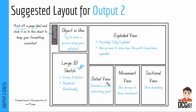Then we have the detail view — a zoomed-in part of an interesting section, or of just one part, like a lid on a bottle or the hand of a clock. Then a movement view showing how movement happens — twisting, moving up and down, opening and closing. You might want more than one movement view and could remove a different one to make room. Then your sectional view to show the inside — make sure you show the hatching so the examiner knows you understand how to do a sectional view. And an object in use view: if you're confident sketching and can show a person using your artifact — just their hand or a full person — that's always good to include, though it's not a requirement if you're not confident with it.